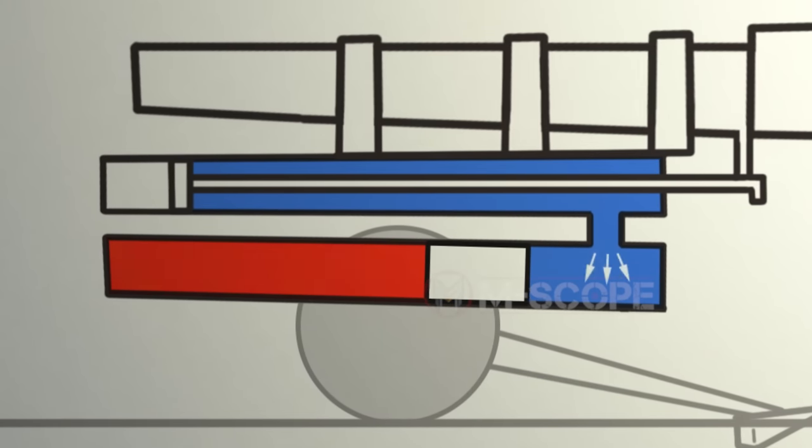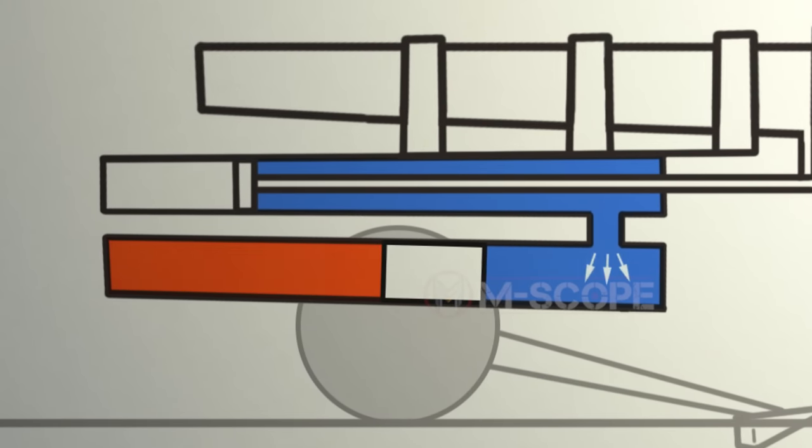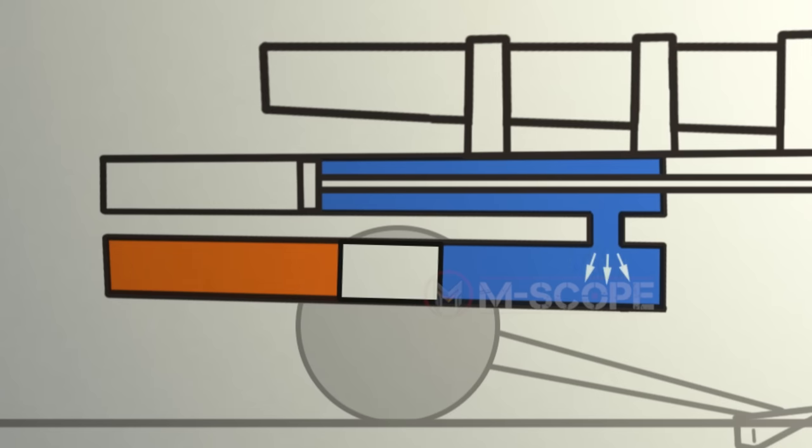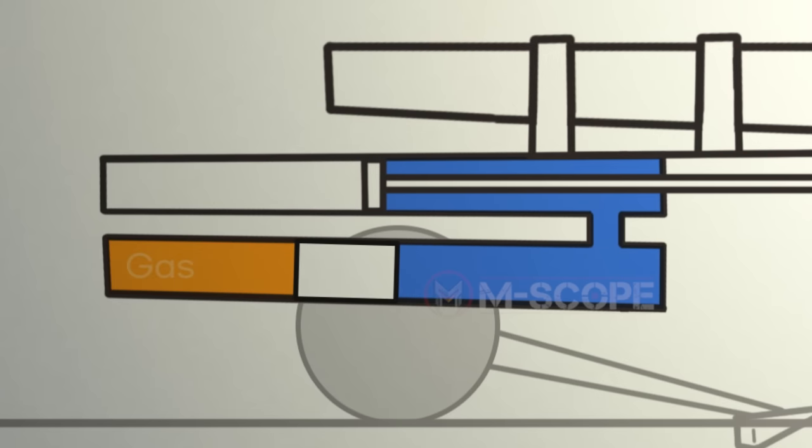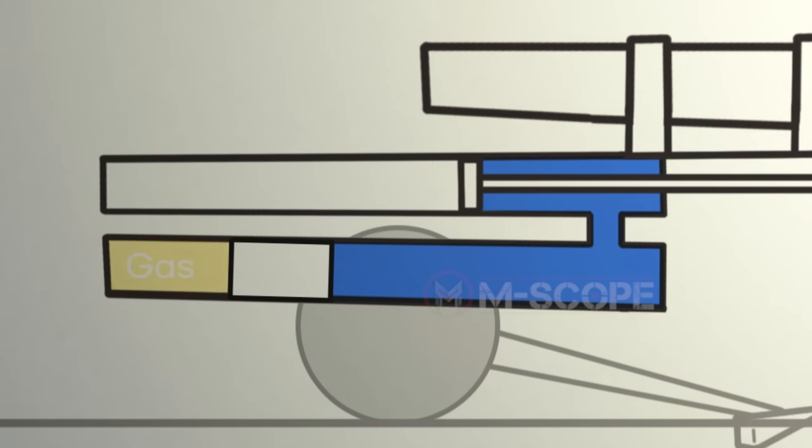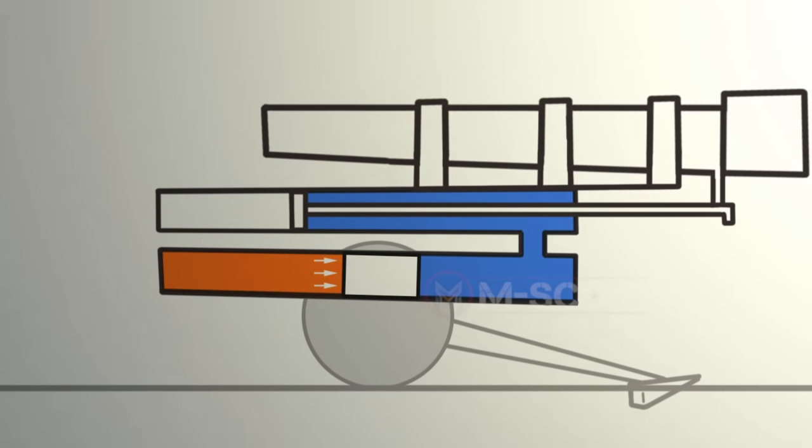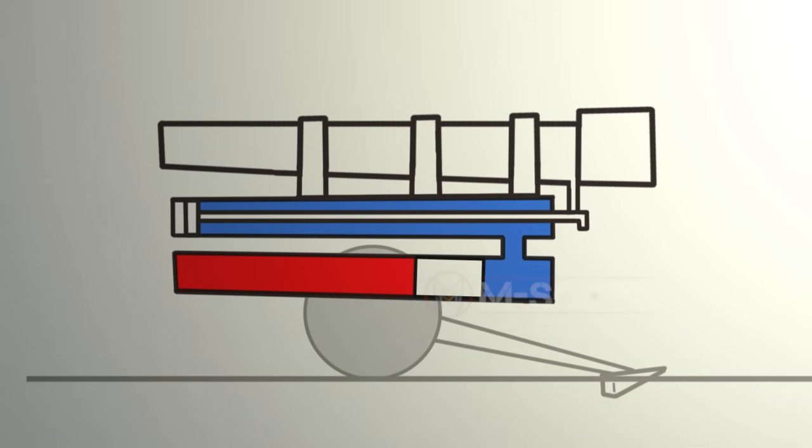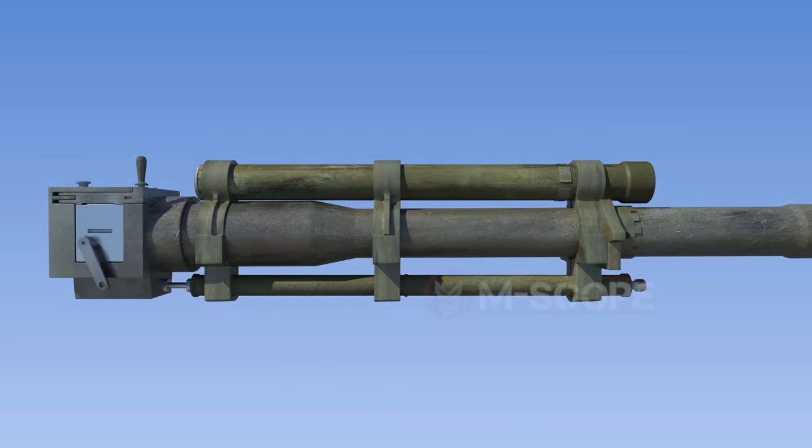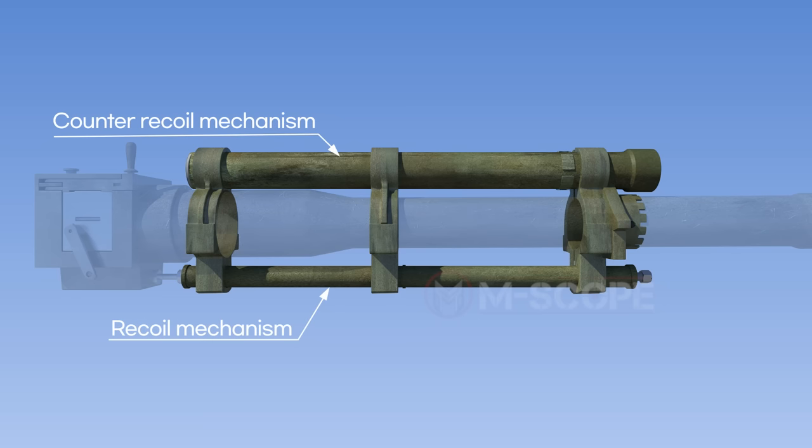As the cannon tube falls backwards, the oil inside the recoil mechanism runs towards the counter recoil mechanism through a connected tube. The gas inside the counter recoil cylinder becomes more and more compressed, and as the cannon tube halts recoiling, the compression rebounds the cannon tube forward. This is the recoil mechanism and counter recoil mechanism of the 105mm howitzer.